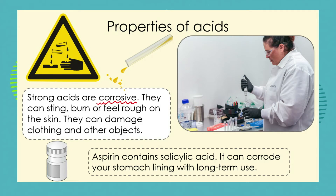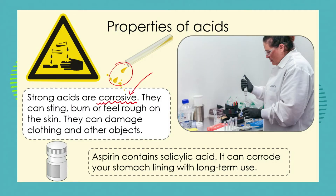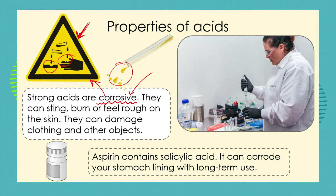Another property of acids is that they are corrosive. Corrosive means that if you spill an acid on your hands or on other materials, the acid will burn away the material. Strong acids are corrosive, and if you ever see a corrosive warning sign on a substance, you need to understand it's warning you that the substance inside is corrosive. If it is spilt on your hands it can hurt you, and if spilt on other objects it can eat away at them.